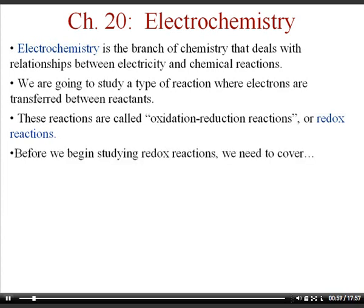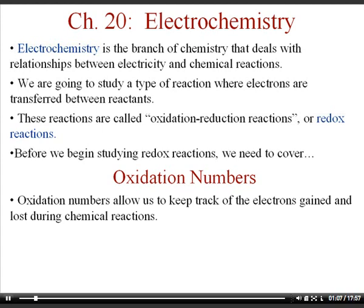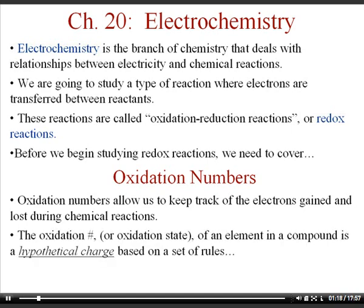Before we begin studying redox reactions, we need to cover a very important concept: oxidation numbers. An oxidation number allows us to keep track of how many electrons are gained and lost during these redox reactions. The oxidation number, sometimes called the oxidation state of an element in a compound, is the hypothetical charge based on a set of rules, which are on the next slide.